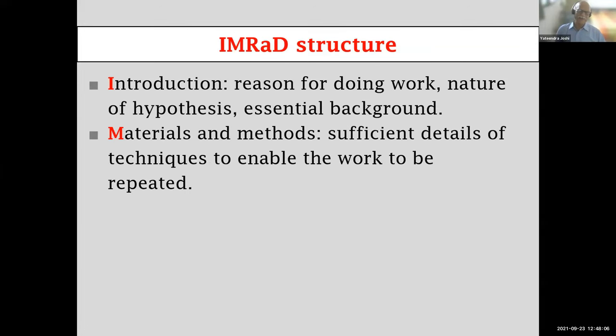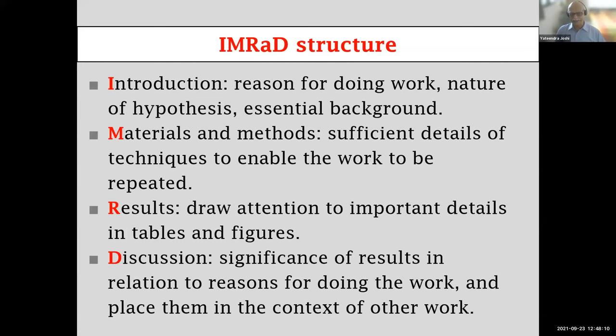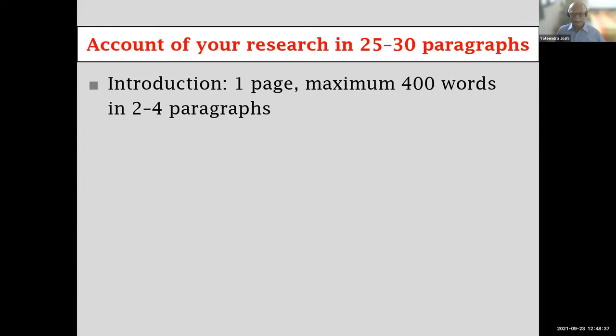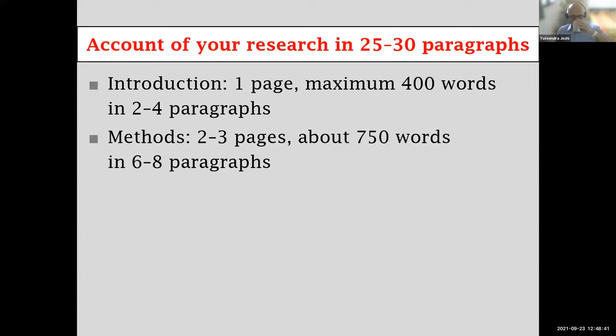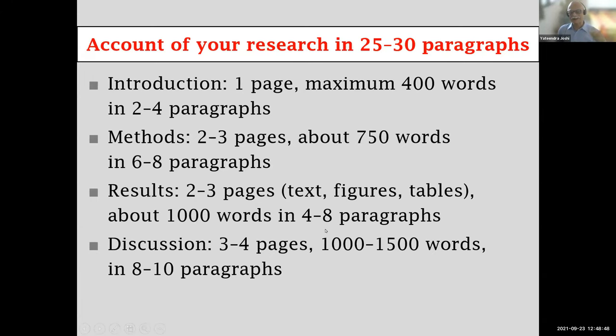Most journals follow the IMRAD structure: Introduction, Methods, Results, and Discussion. Each section answers a question. When sitting down to write, think of it not as writing a research paper but as presenting an account of your research in about 25 to 30 paragraphs. Introduction answers 'Why?' — state the problem, give numbers to justify its importance, briefly review how others have approached it, specify what is different about your paper, and end with a statement of your specific objectives.